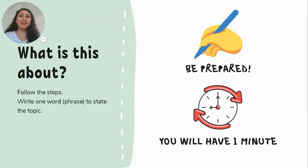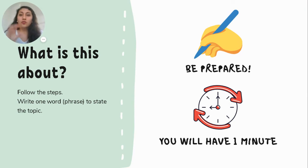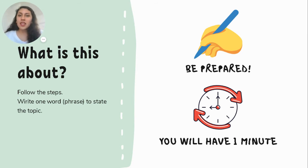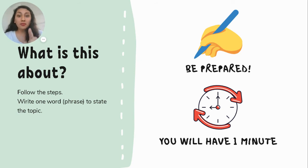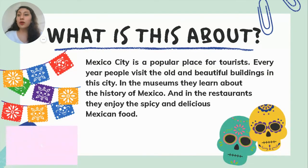Next exercise. Again, what is this about? In this exercise you're going to have a paragraph. Follow the steps: first, read the title if there is one; then read quickly the entire paragraph; then ask yourself what is this about; and write your topic — one word or a phrase, not a sentence. Be ready, because you have one minute. Let's start. What is this about? You have 30 seconds left.